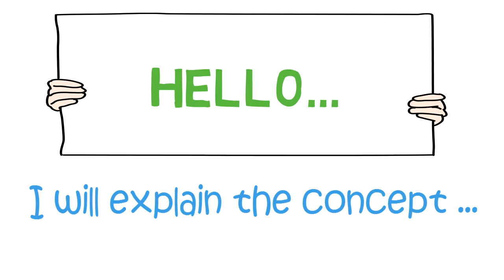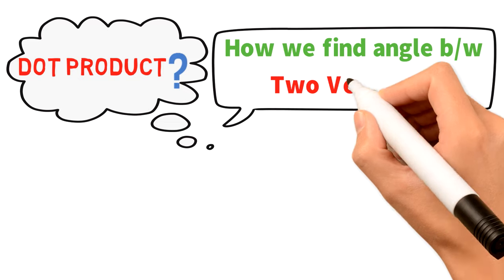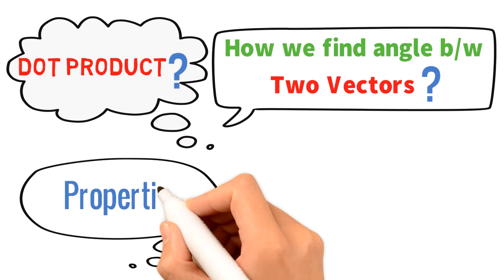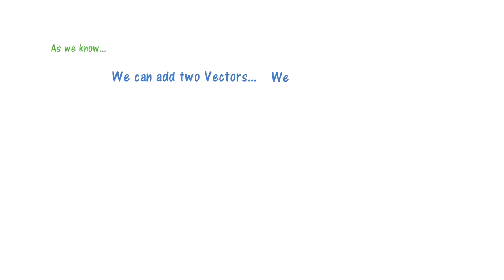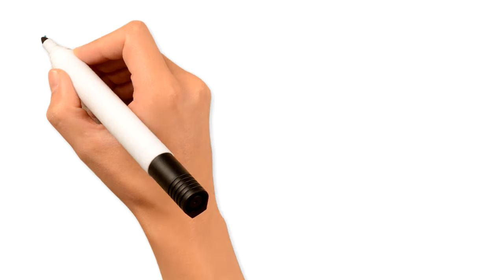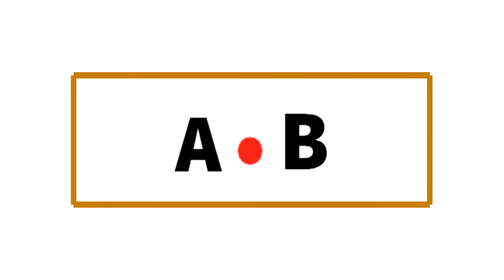I will explain the concept of dot product: how we find the angle between two vectors, the properties of dot product, and the application of dot product. As we know, we can add and subtract two vectors. Now we will multiply two vectors. If I have two vectors A and B and I put a dot sign between them, this is read as the dot product of vector A and B.